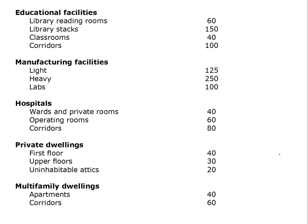For common design situations: a private dwelling is 40 pounds per square foot for the main floor, 30 pounds per square foot for upper floors since you don't typically have dense parties there, and 20 pounds per square foot for uninhabitable attics — though if you ever think you might inhabit the attic, design it for at least 30. For multi-family dwellings it's 40 pounds per square foot, and corridors in such dwellings are 60 pounds per square foot.